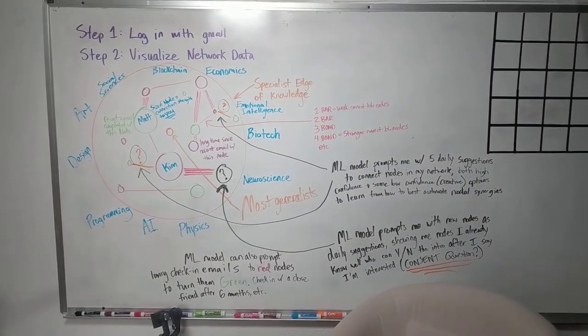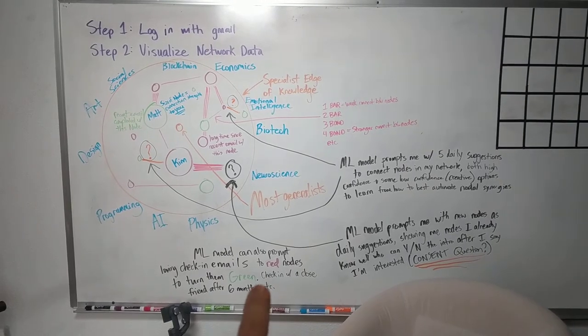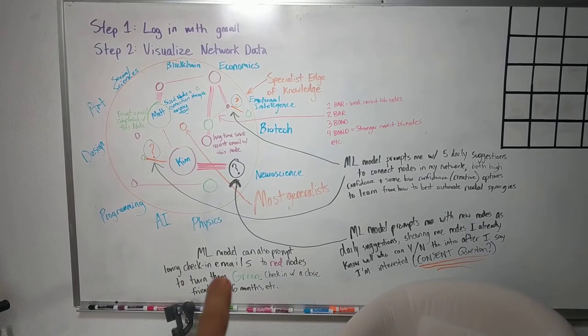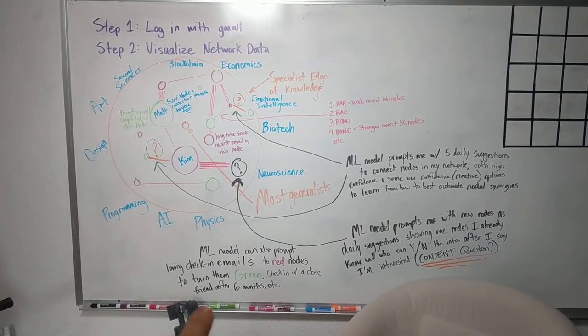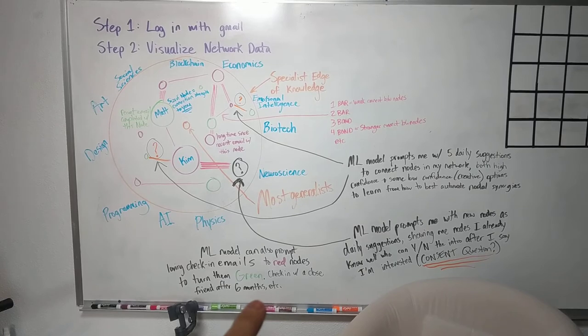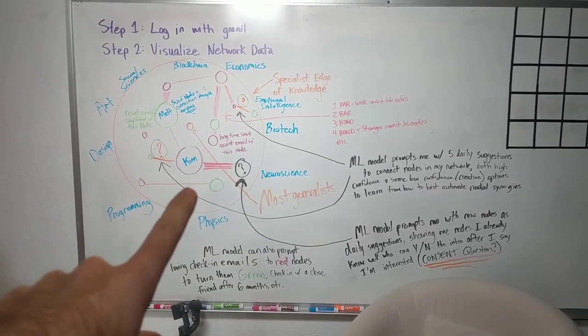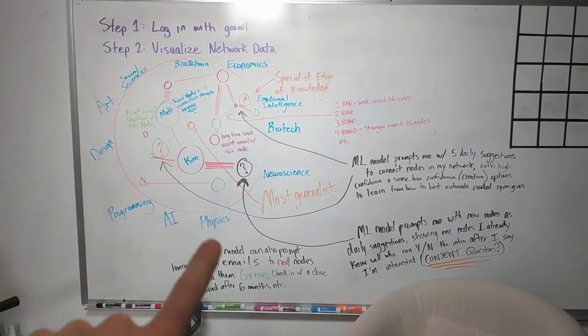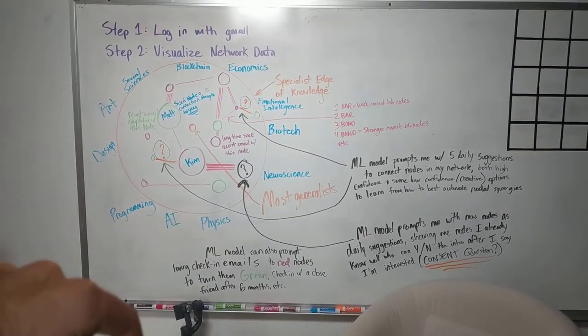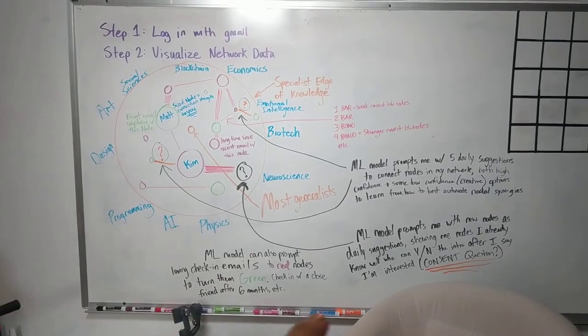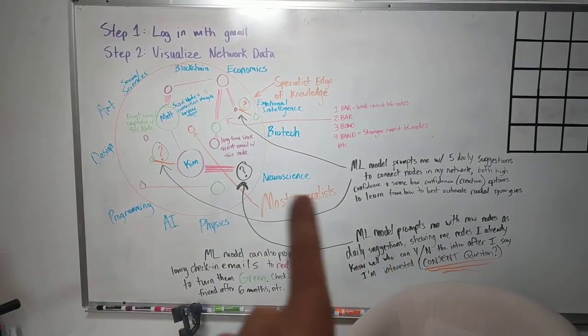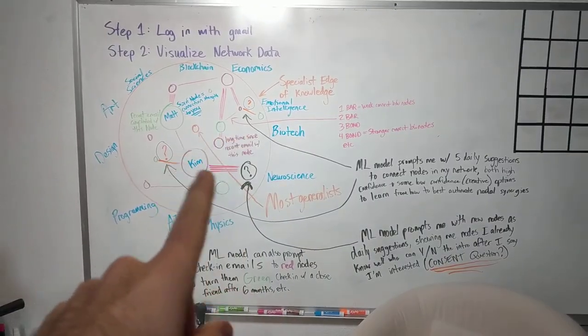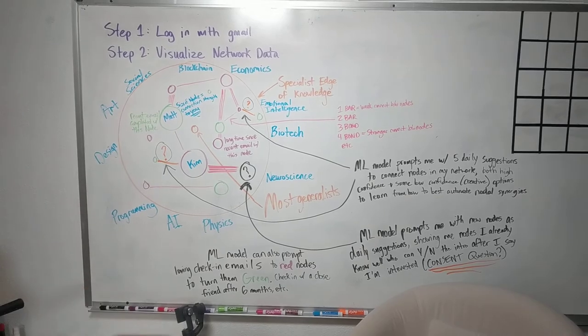And then likely lastly to explain here is that it's also interesting to see down here that the ML model can also prompt these loving check-in emails to red nodes, like Kim, to turn them green. So I can check in with a close friend after six months. So we can automate a prompt that sends to me, do you want to check in with Kim? It's been six months. She's red on your node and you can turn her green. And so you can better keep in touch with people this way. You can better not only connect to the prominent nodes that you can connect to, but also connect your friends to prominent nodes, to other nodes that can help them with their goals.